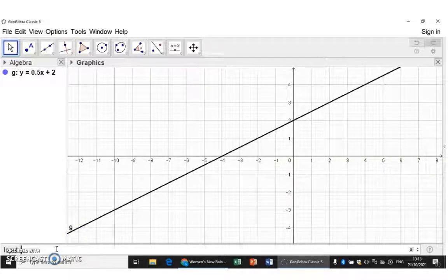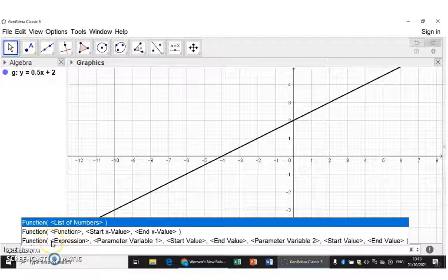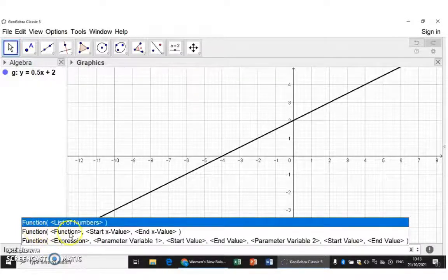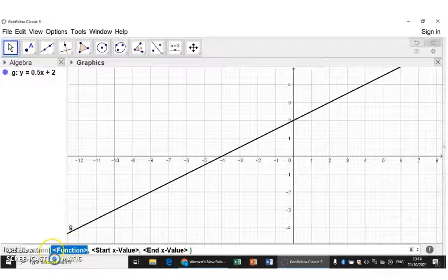I'm going to start typing function and then you will see a list of options appear. We want to draw this graph only for a specific domain. I'm going to choose the middle option and it tells you exactly what you need to type. Firstly, you need to enter the function.